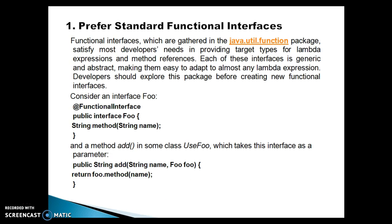The first point is to prefer standard functional interfaces. We have already seen that a handful of functional interfaces are available in java.util.function. If your requirement is fulfilled by the functional interfaces available in java.util.function, then we should always prefer the existing functional interfaces instead of writing our own. Functional interfaces in this package satisfy most developers' needs in providing target types for lambda expressions and method references. Each of these interfaces is generic and abstract, making them easy to adapt to almost any lambda expression. Developers should explore this package before creating new functional interfaces.